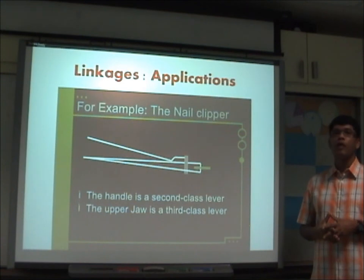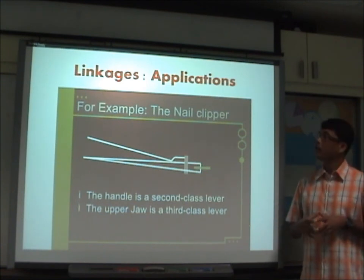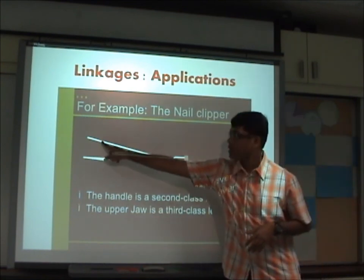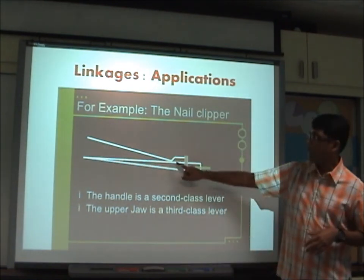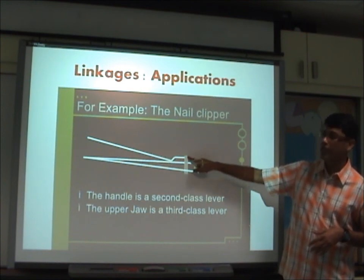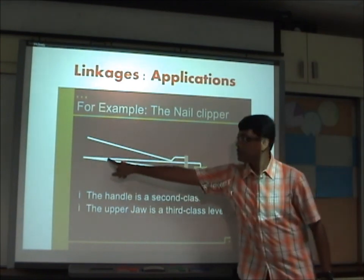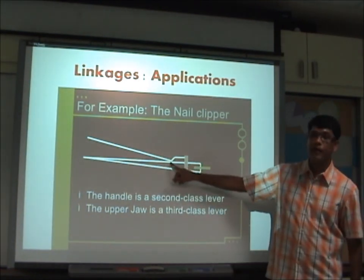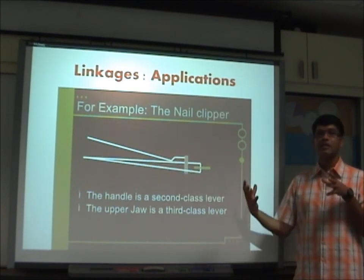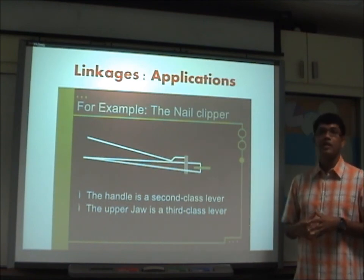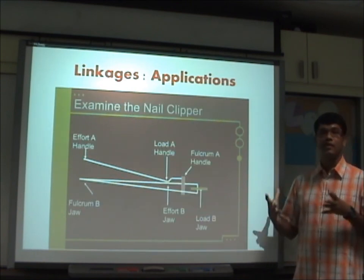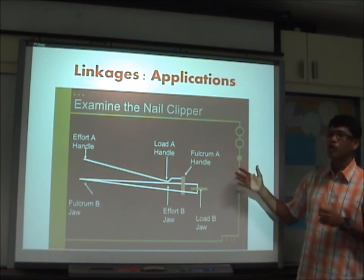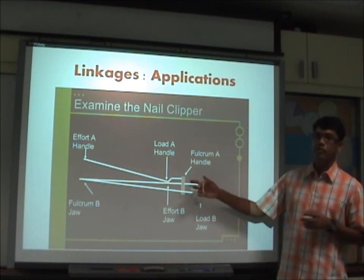A good example of linkages is a nail clipper, which combines two classes of lever. The handle is a second class lever system — you apply effort at one end, the load is the cutting jaw, and the fulcrum is at the other end. The upper jaw is a third class lever system — the fulcrum is at one end, the load is at the tip, and the effort is in the middle. In that way, two classes of lever come together to form a linkage. The nail clipper is a great example to study as a linkage system.